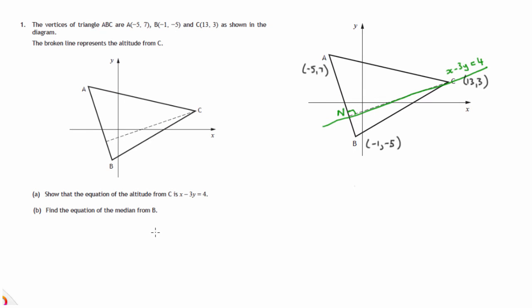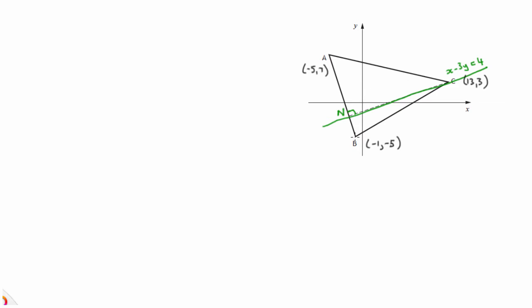Part B now. Find the equation of the median from B. Now the median is a line from a vertex to the midpoint, let's call it M, of the opposite side. So in this case, there's the median. To find this out, we would need to work out what the midpoint is. And there's a midpoint result. If we have PQ being (x1, y1) and (x2, y2), then M, the midpoint of the line joining P to Q, would be the mean of the x coordinates. So that's (x1 plus x2) over 2, and the mean of the y coordinates.